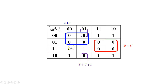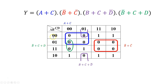We have one zero left to cover, which groups with an adjacent zero to form a group of two. In that group, B equals 1 (not B), C equals zero (C), and D equals zero (D), giving us not B or C or D. So the full product of sums is: (A or C) AND (not B or not C) AND (B or C or not D) AND (not B or C or D).